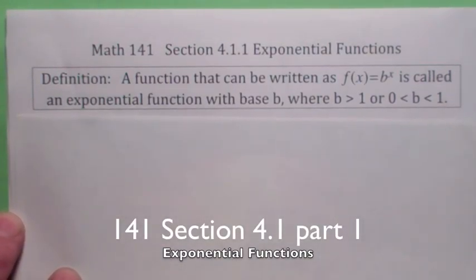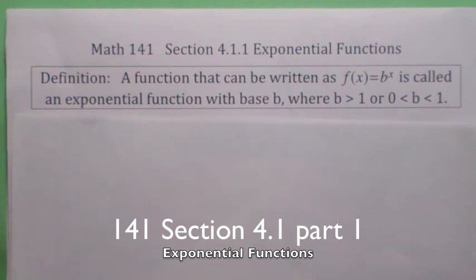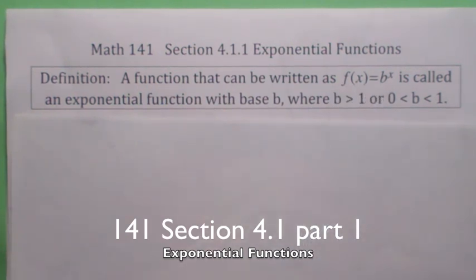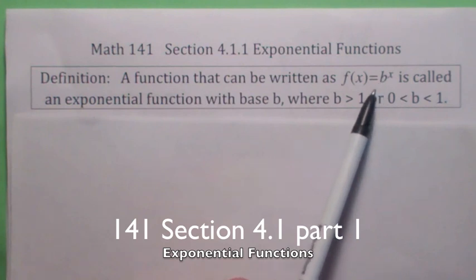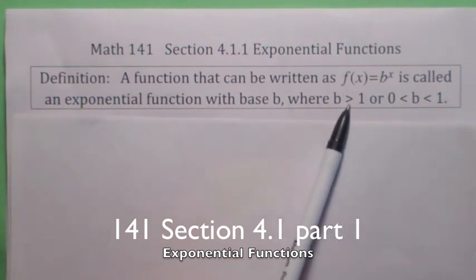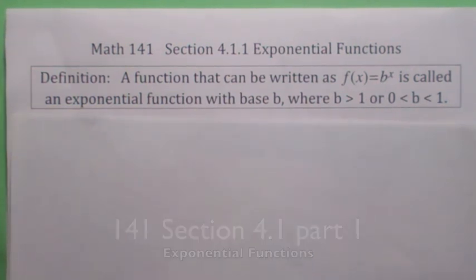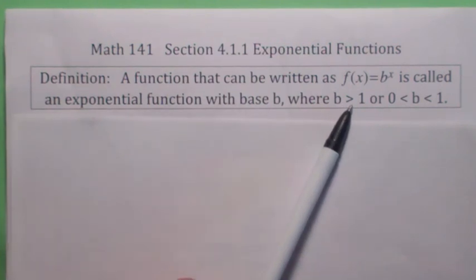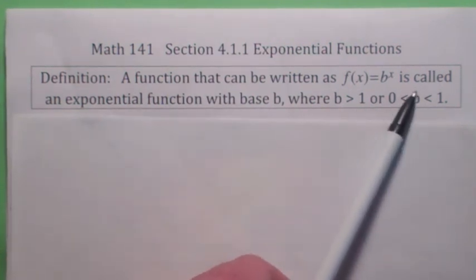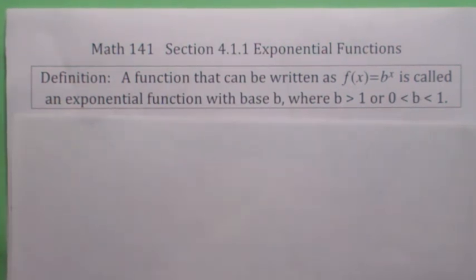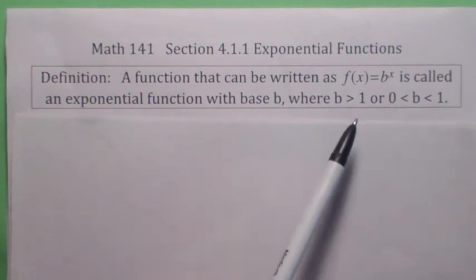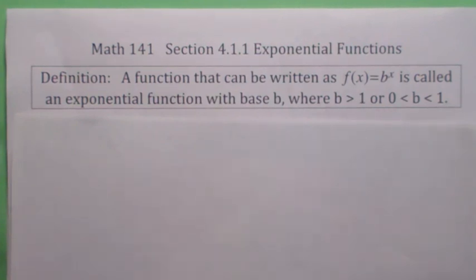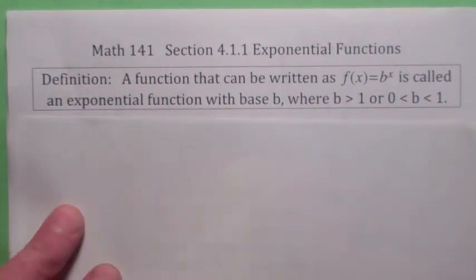In this section, we're going to be talking about exponential functions, which is any function that can be written in the form f of x equals b to the x, where b is a constant either greater than 1 or between 0 and 1. There are two basic shapes. If b is greater than 1, you get one type of exponential function. If b is between 0 and 1, you get the other. We do not allow b equal to 1 and we do not allow b negative.